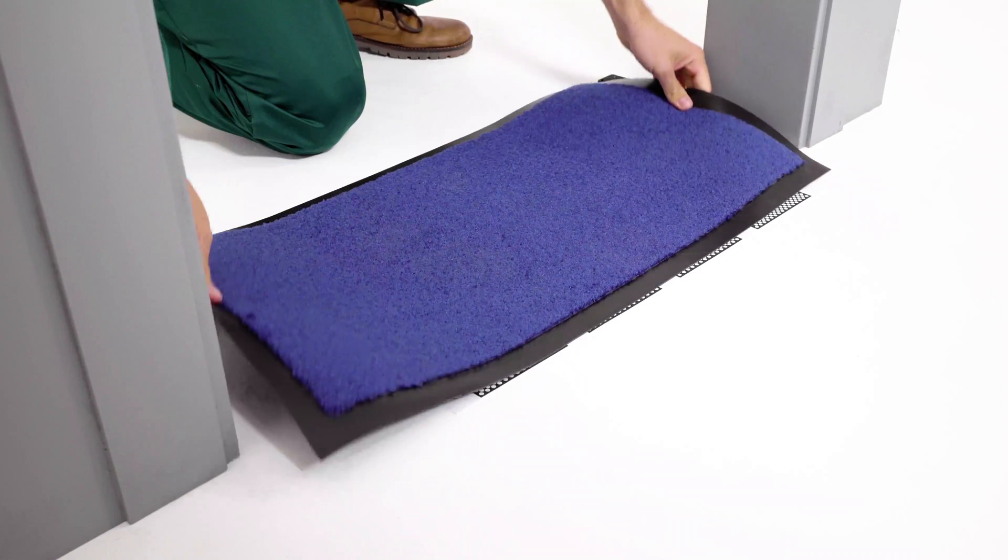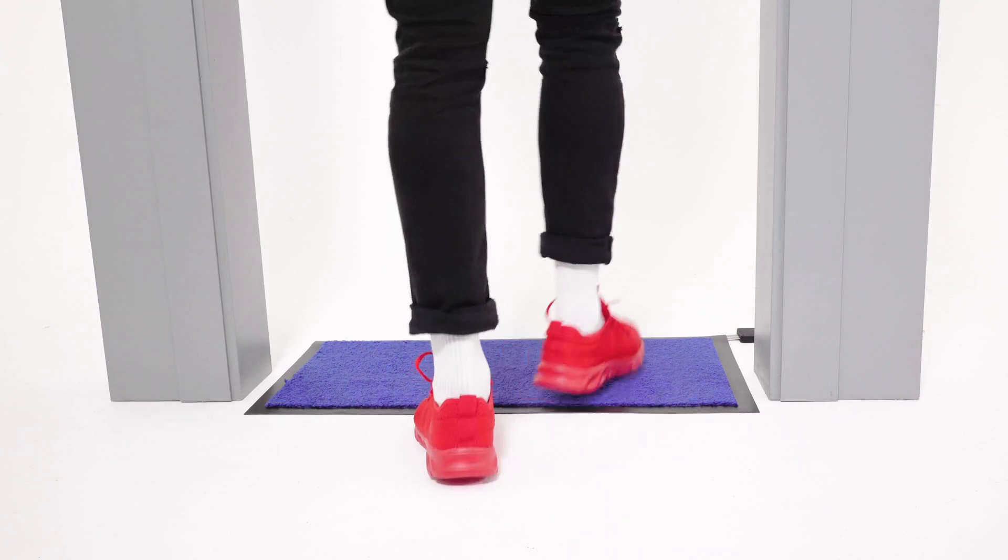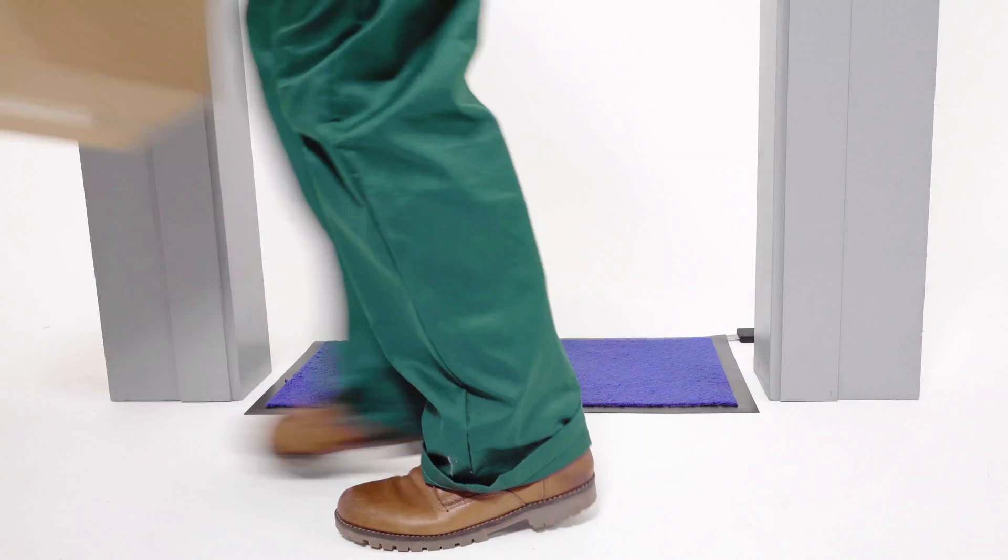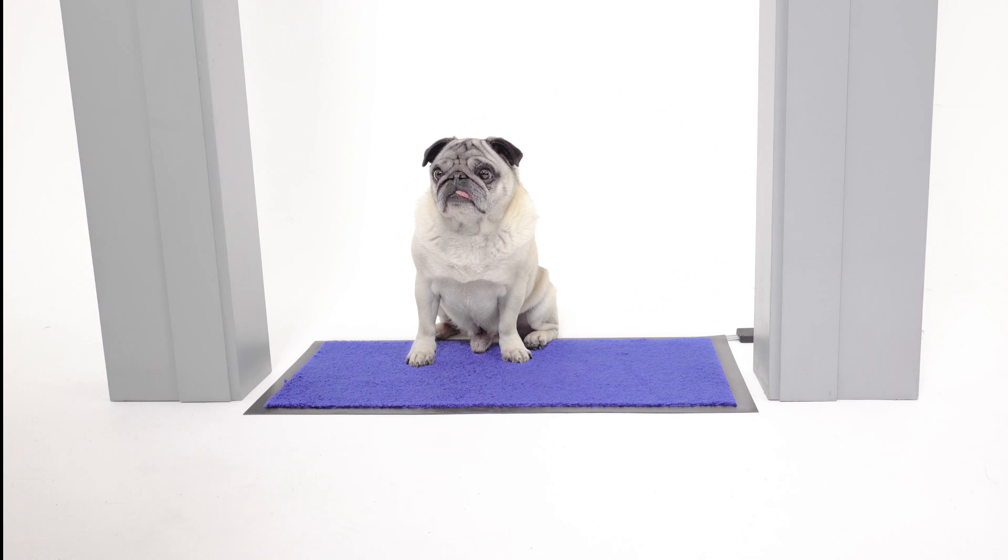We can instantly create a smart floor and conceal it with a standard doormat to count occupants, measure social distancing, detect whether a package has been left, and even differentiate between people and animals, like Rory.